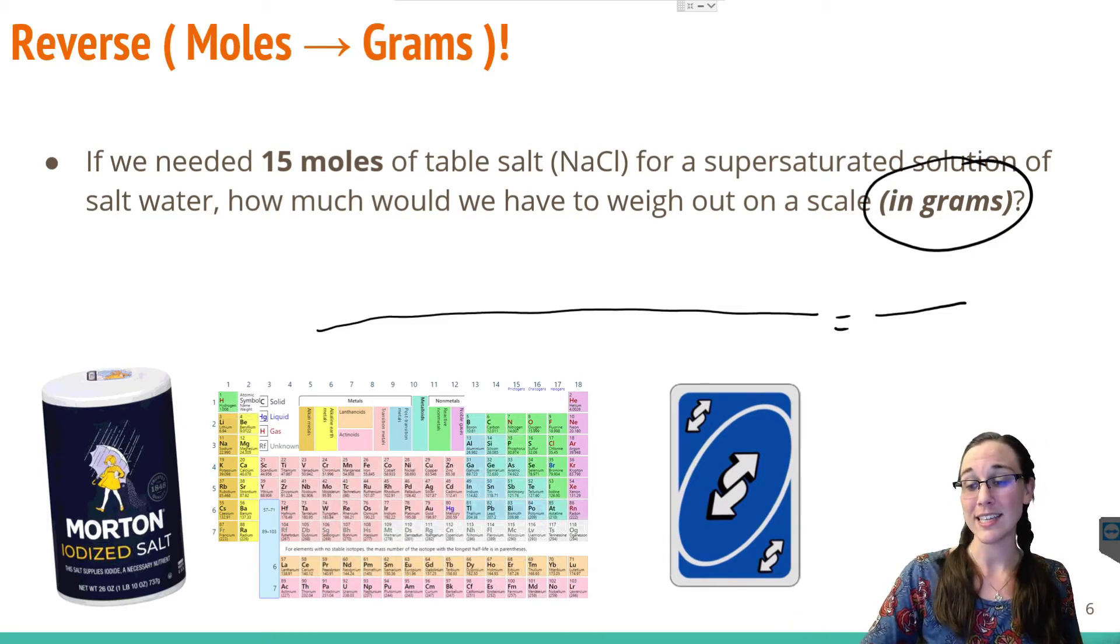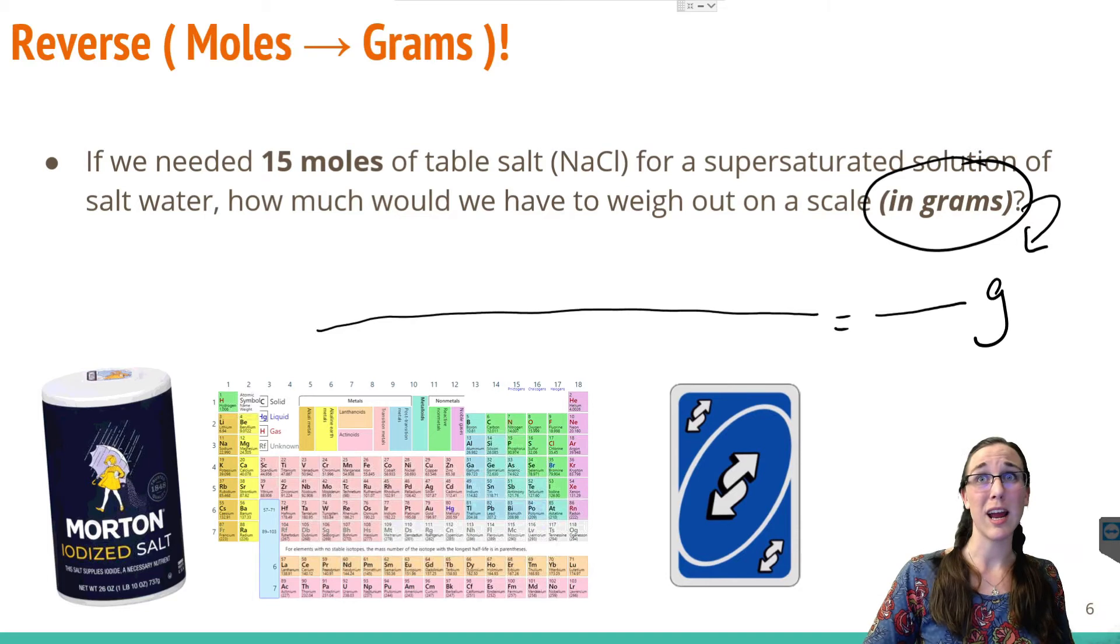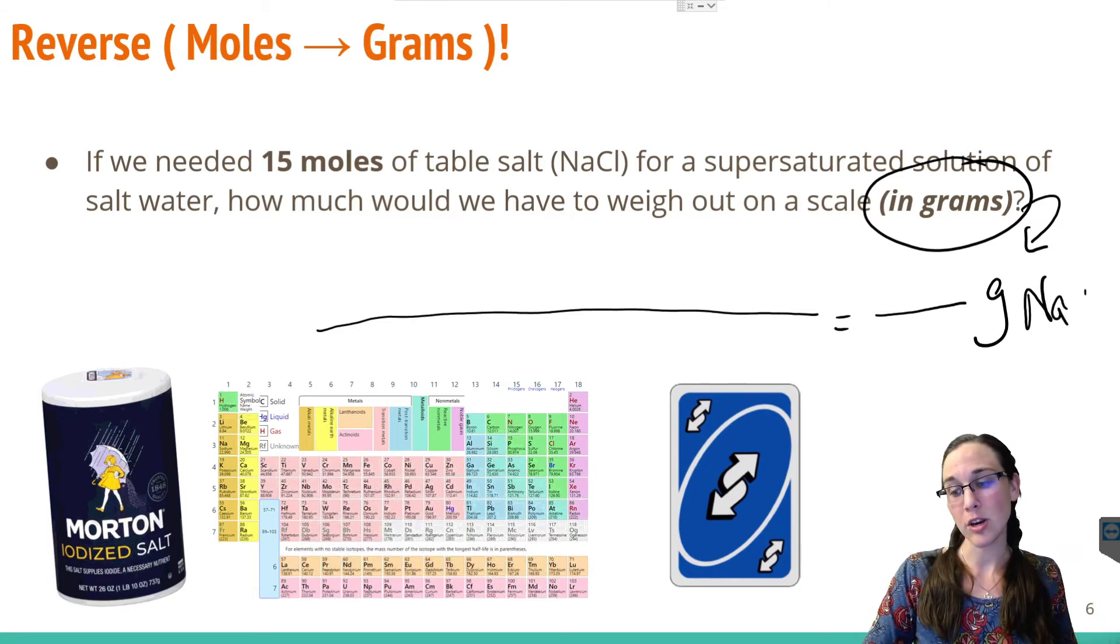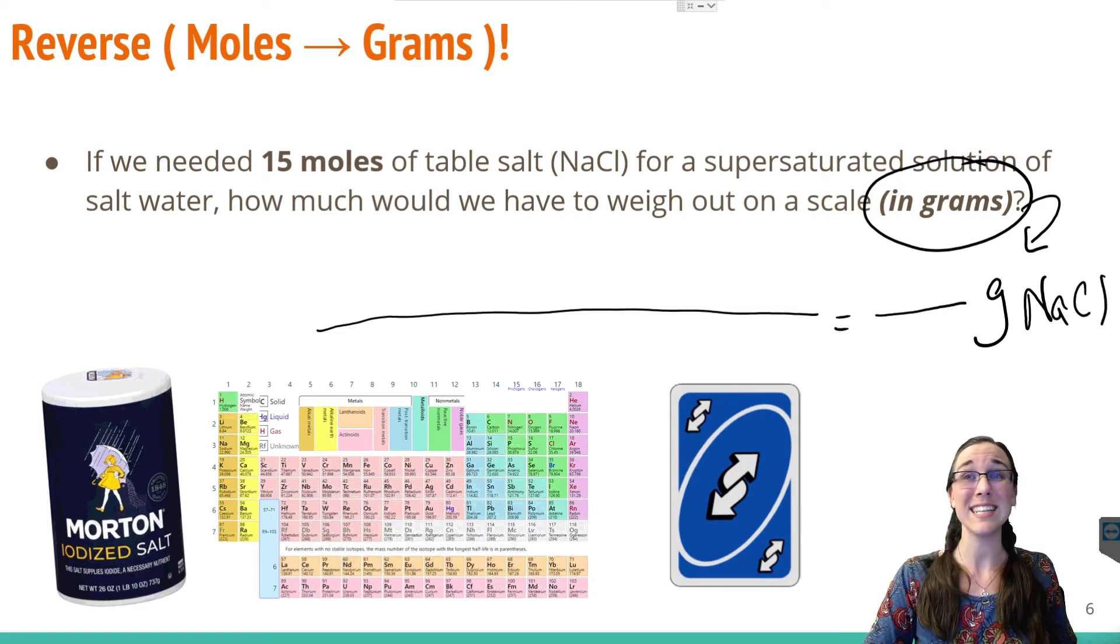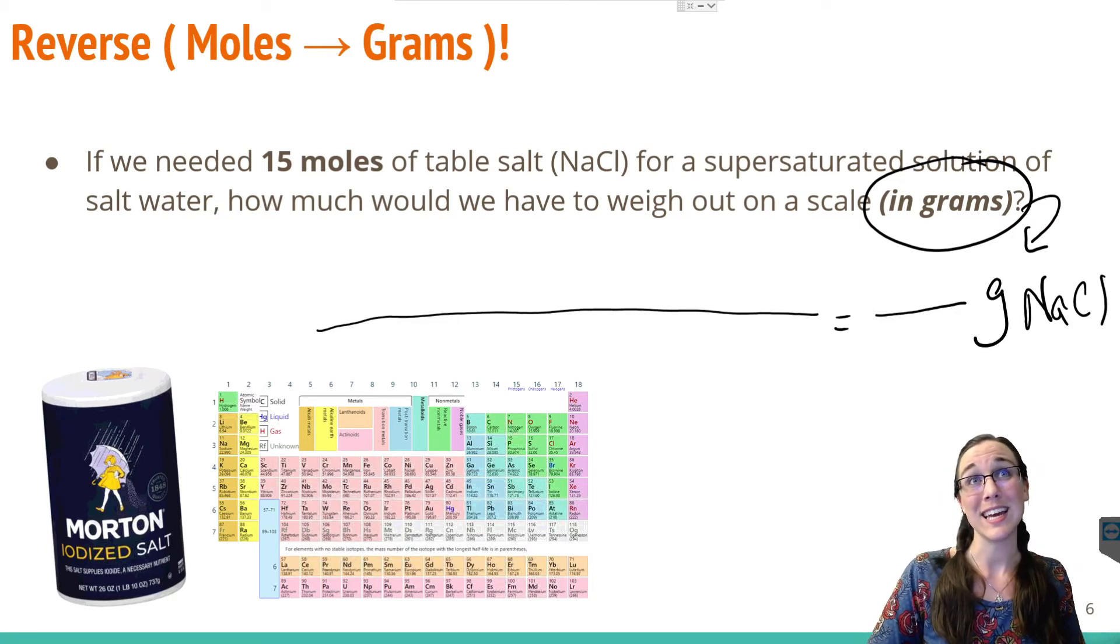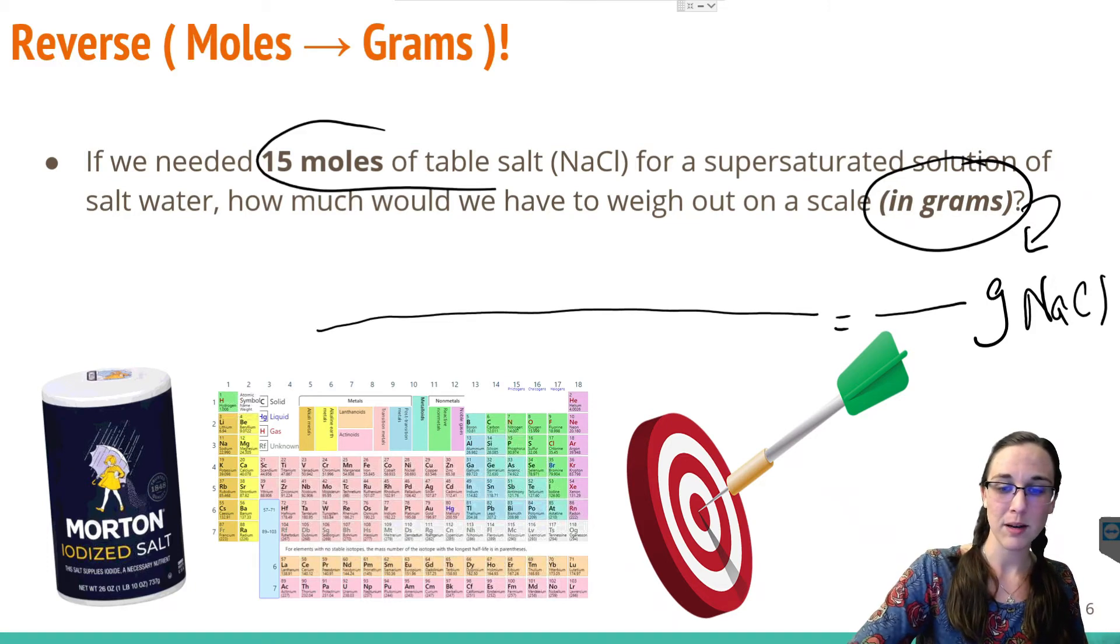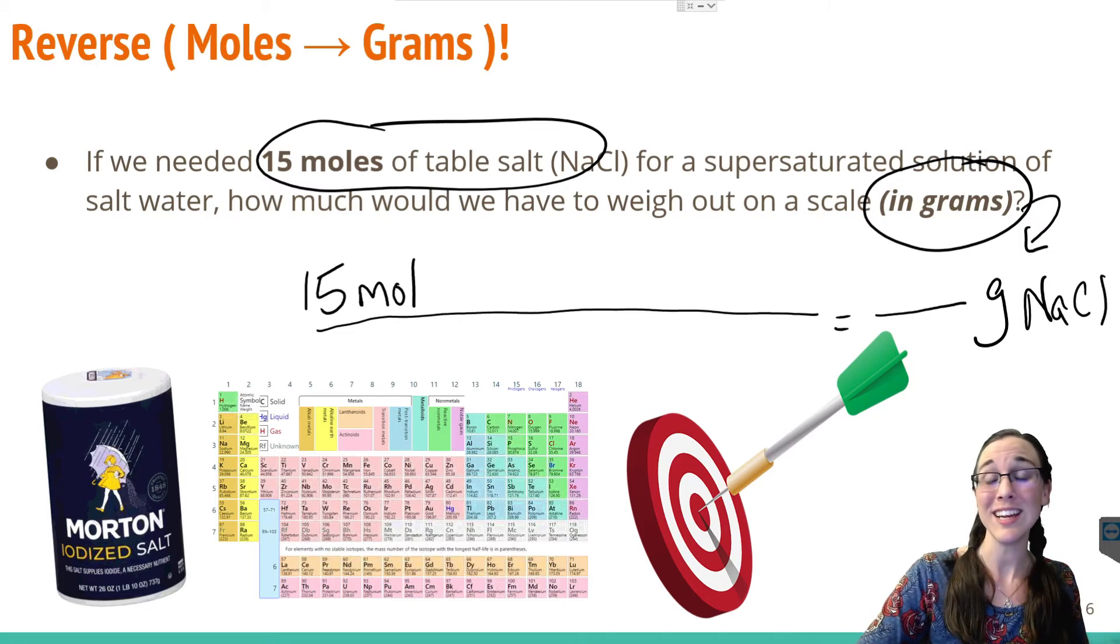Our goal units this time are grams. Grams of what? Grams of butterfly wings, grams of eyeballs, grams of hair follicles, grams of NaCl. Make sure that you are diligent with your labels. This will come in handy greatly in the future for all of the other more complicated dimensional analysis setups. So we have grams of NaCl as our goal units. We're given 15 moles of NaCl. So that's going to go on top as our given for 15 moles of NaCl.